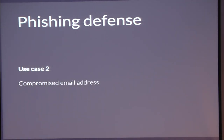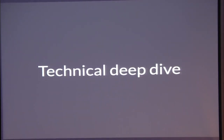The second application in the phishing defense use case is compromised email addresses — high reputation emails like mine that have been taken over and are temporally bad. This is actually a lot more difficult to get right. We'll talk about what we're doing to address that.